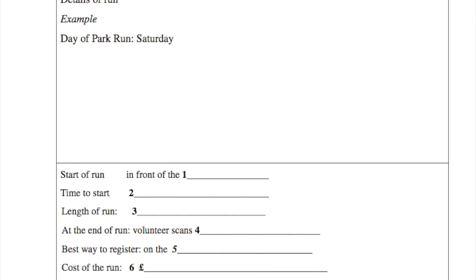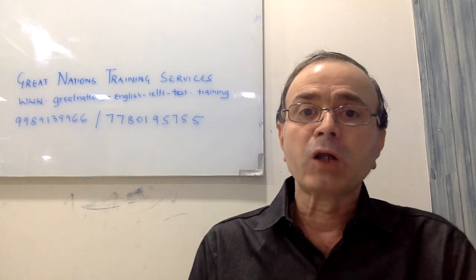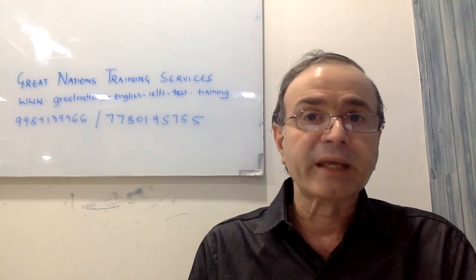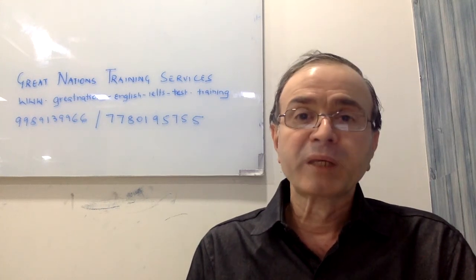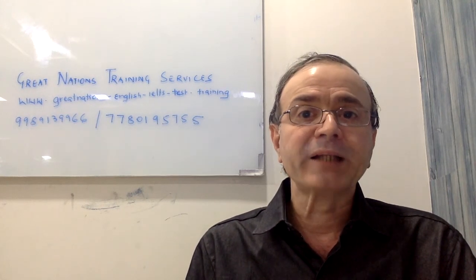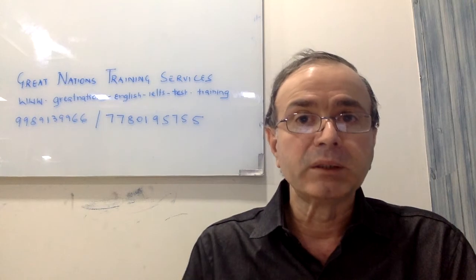On the other hand, question number 6, cost of the run — already mentions pounds dash. So your answer should only be a number and you should not be writing pounds again. So be careful when you have to answer the blanks with numbers.